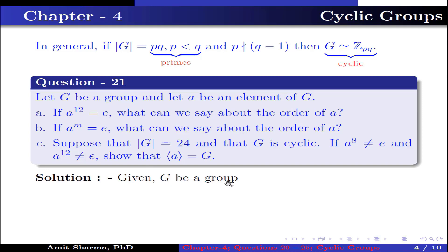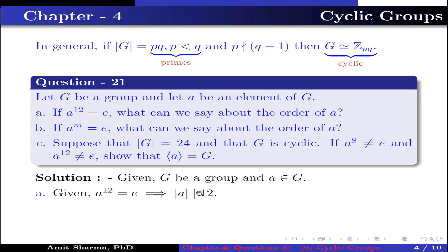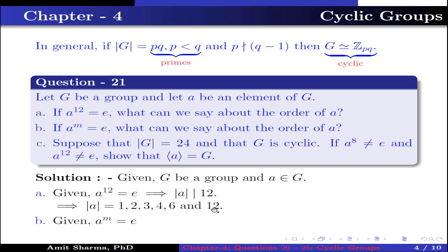Given G is a group and A belongs to G. Part A: given A to the power 12 is equal to identity, this implies the order of A divides 12. Therefore the possible orders for A are 1, 2, 3, 4, 6, and 12.